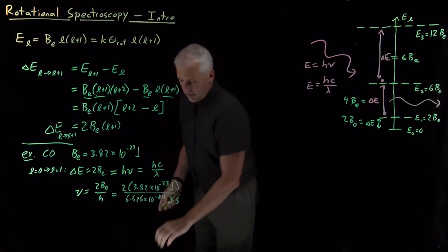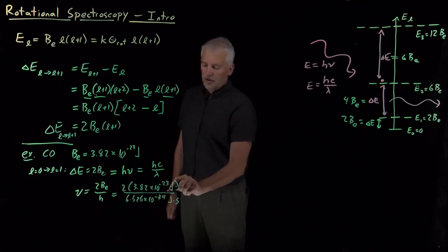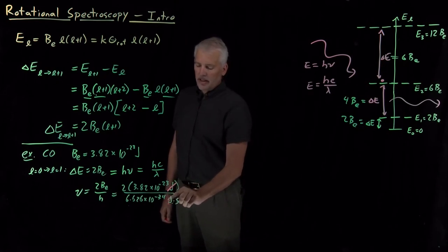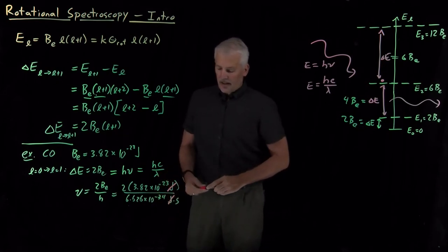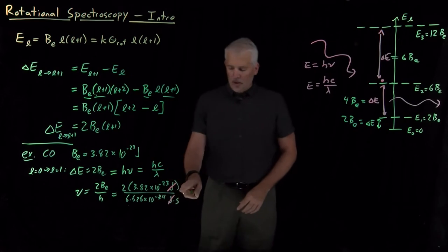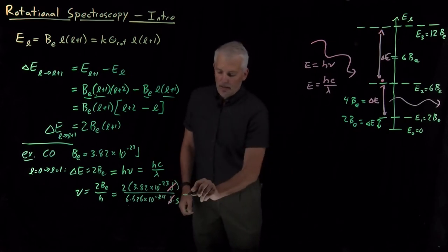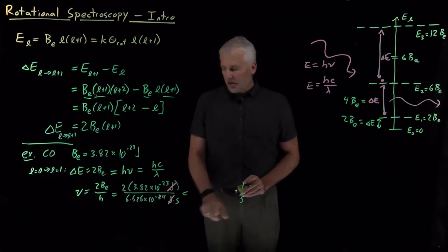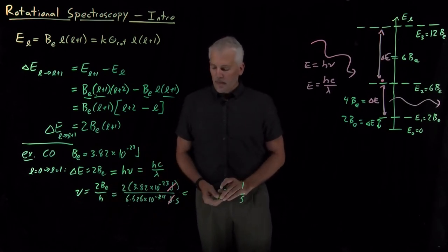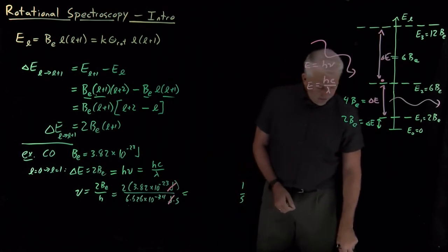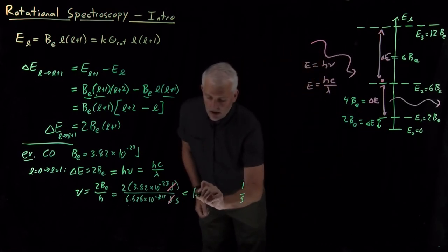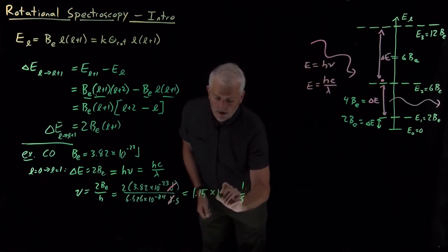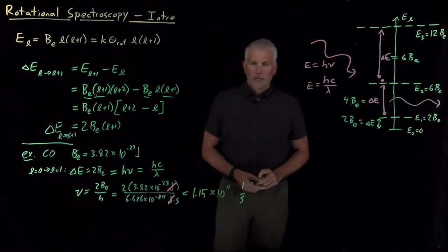So thinking briefly about units: joules on top from the rotational constant cancel the joules that are hiding inside of Planck's constant. The units leave seconds in the denominator, so the units are going to be one over seconds, which is correct for a frequency. And if we do the math, that frequency turns out to be 1.15 times 10 to the 11th per second.